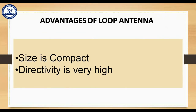Advantages of loop antenna: the size is compact, and directivity is very high. It is indeed compact in size and you can bend the wire according to your needs. It has high directivity and maximum radiation.